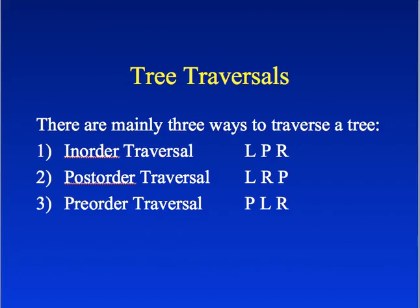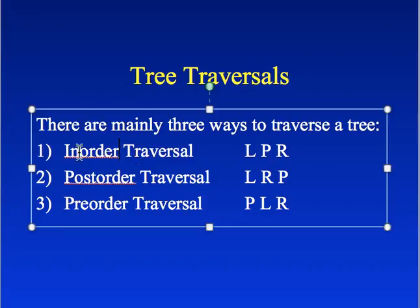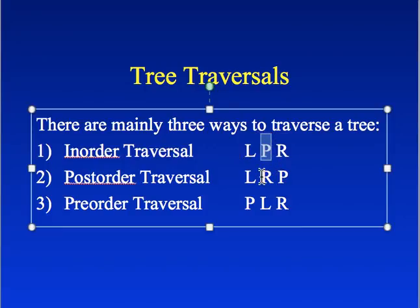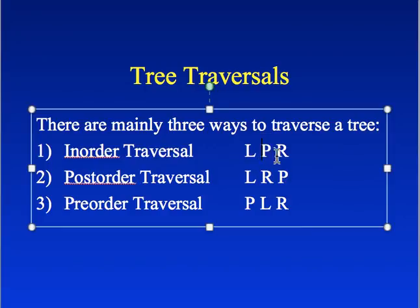Now let's look at traversals — tree traversals. There are mainly three ways to traverse a tree. The first one is in-order traversal: left, process, right — left subtree, then process, then right subtree. In some textbooks they use the term 'visit,' but I don't like that term because visiting might confuse you, since we also visit when going to the left. Instead, we say 'process,' which means either save it, update it, print it — do something. So with in-order traversal, process is in the middle.